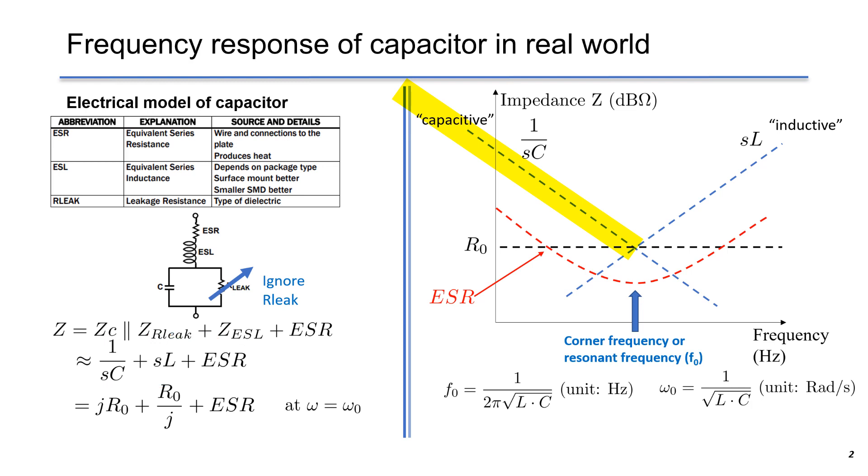At low-frequency, where S variable is small, capacitor impedance 1 over SC will be the largest. At high-frequency, SL will be the most dominant part, since S is much larger in high-frequency.